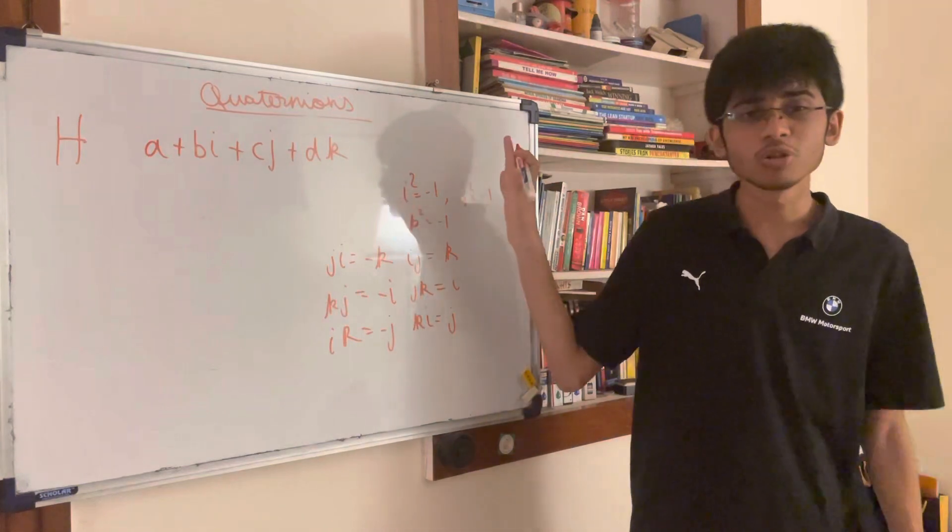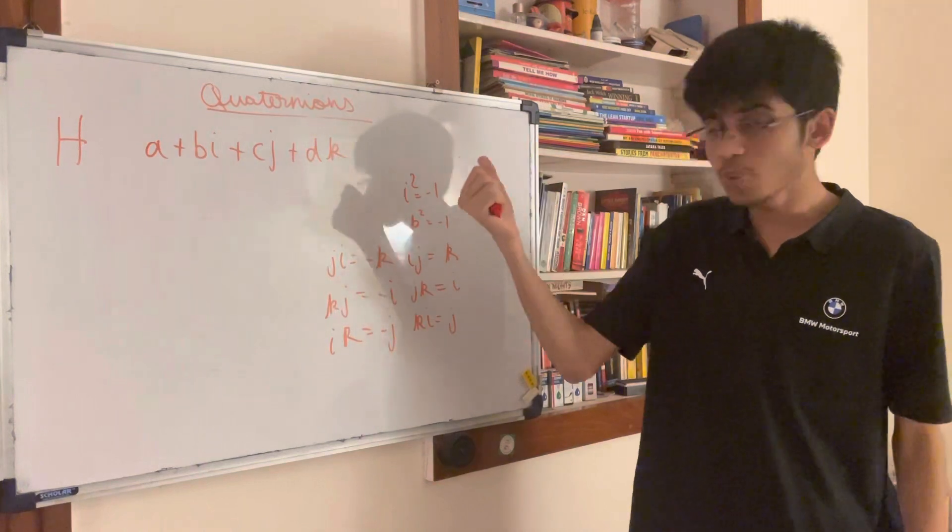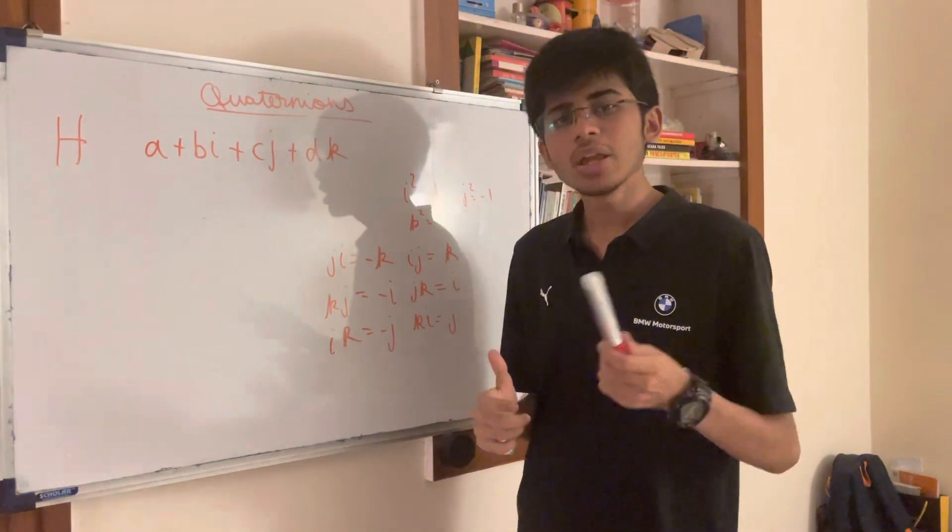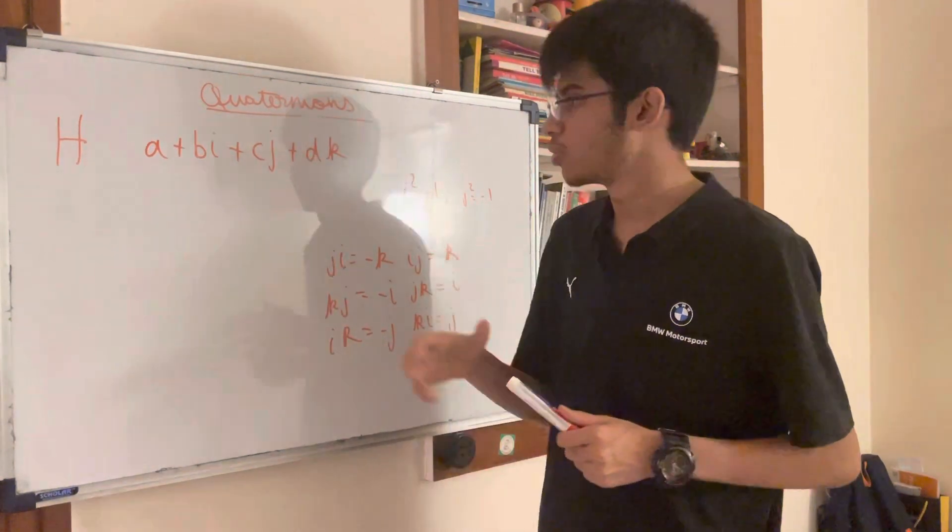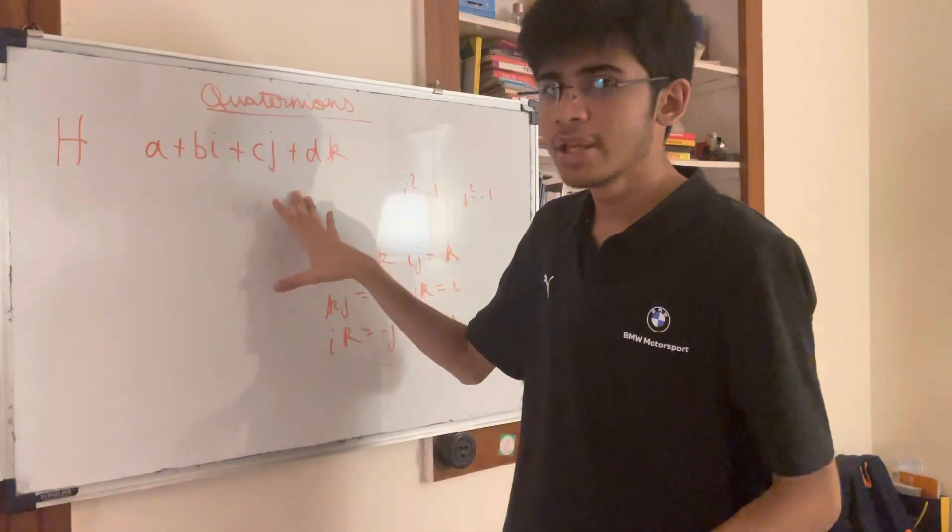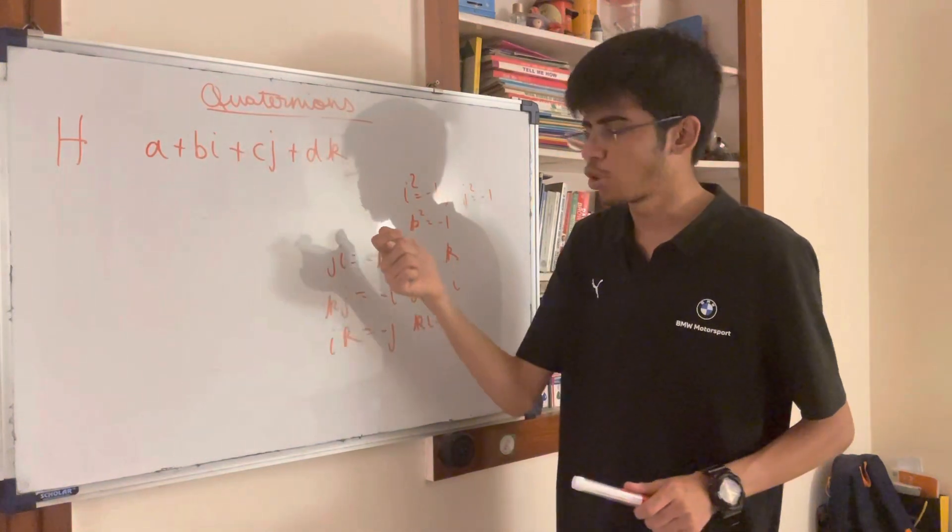These are the rules for quaternions. It's pretty simple to work with them if you know these rules. One more thing about quaternions is that they are non-commutative. Commutativity means that if you multiply x into y, it's the same as y into x. That doesn't work for quaternions.